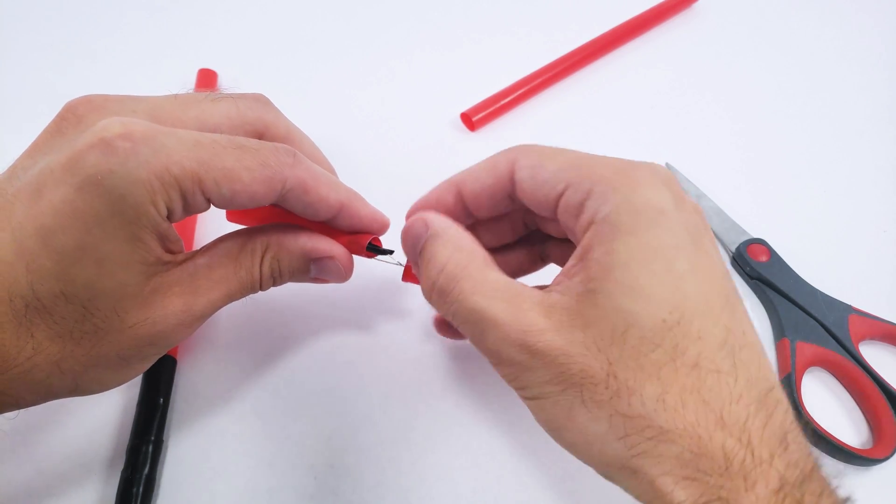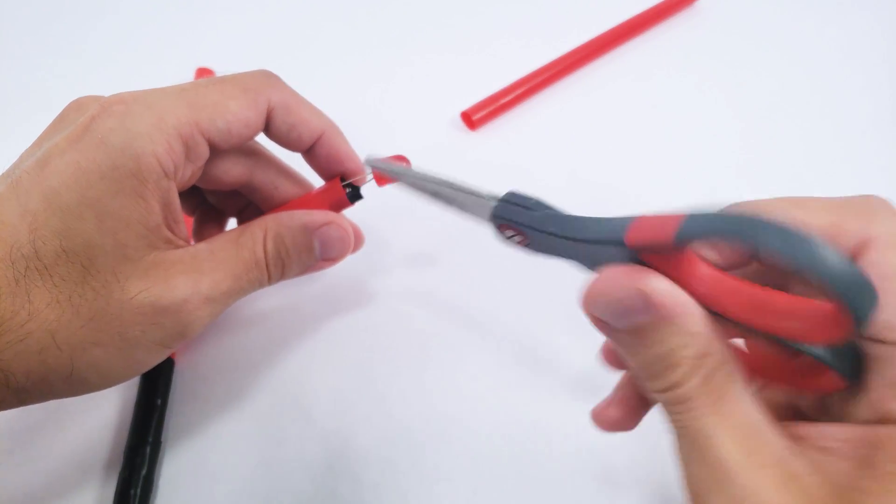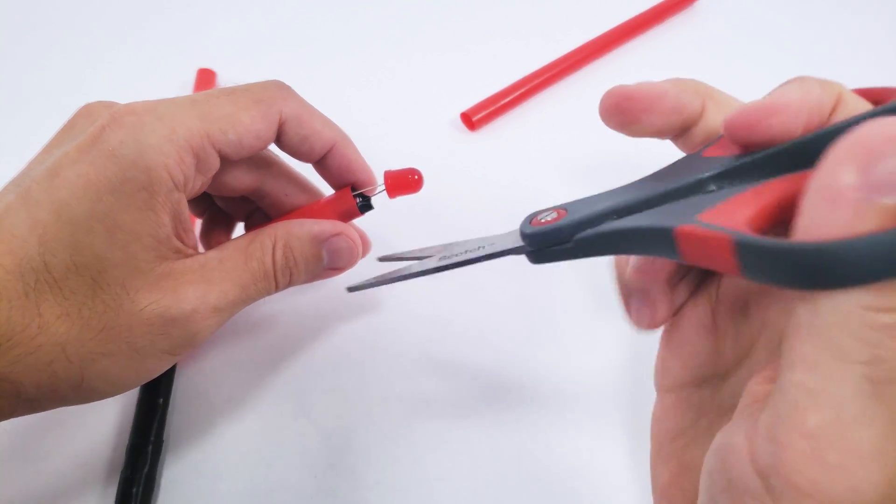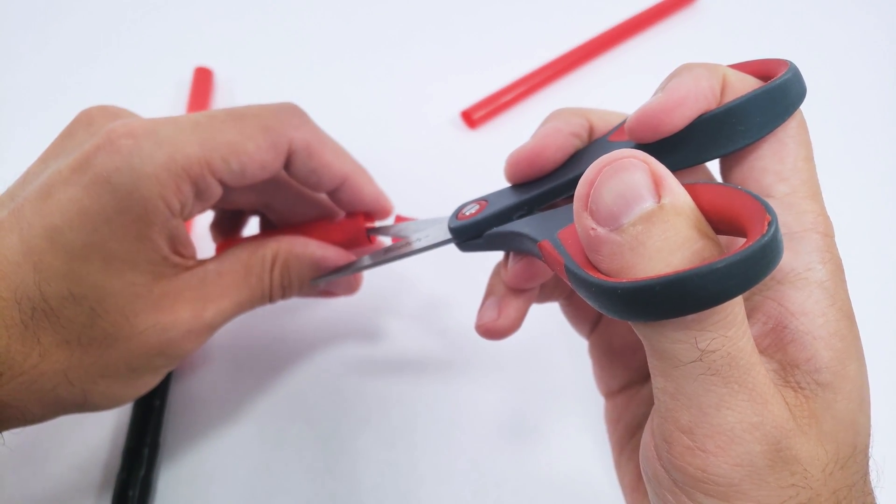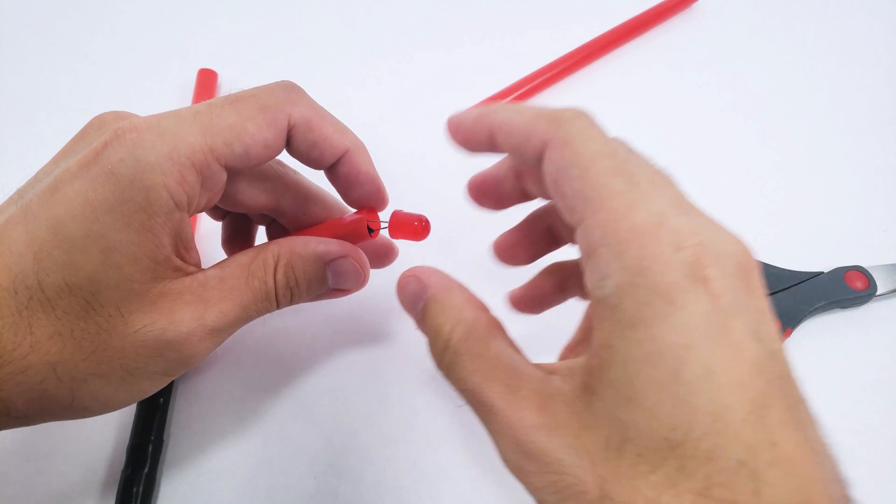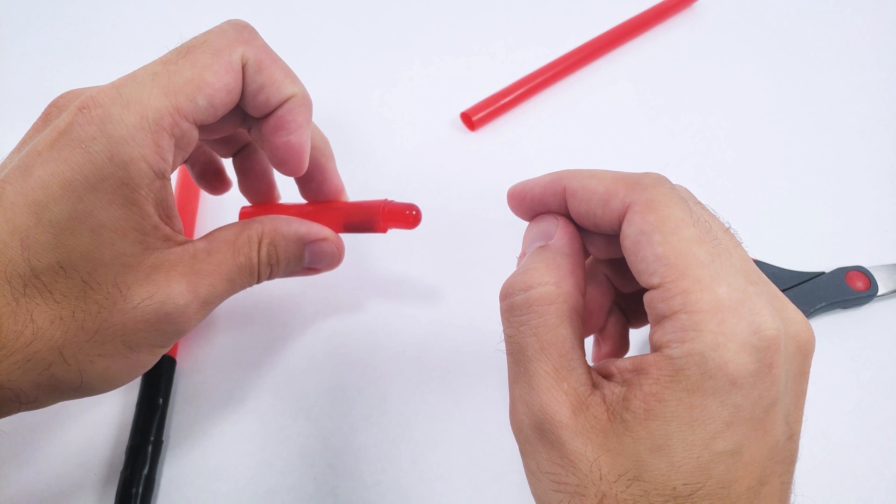Now, depending on how well you have it taped on there, the battery might start to slide off. So you can take something skinny like your pair of scissors or a pencil if you have it handy and use that to kind of push the battery in and make sure you get the legs of the LED all the way down in there so that the LED is flush with the top of the straw like this.